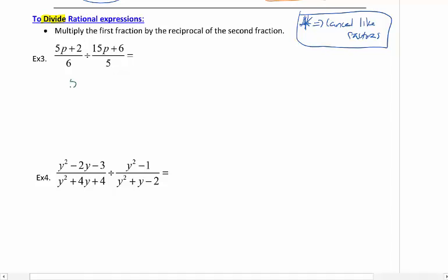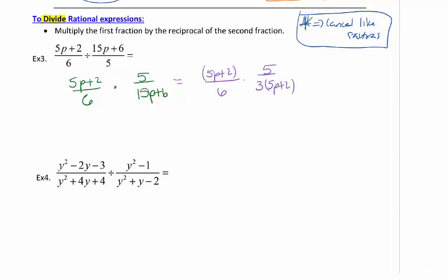The first thing I'm going to do on number 3 is flip the second fraction. Now that it's multiplication, I'm going to factor any of the terms that I can. There's nothing to do for the first fraction. The second rational expression, I can pull out a 3, and that would leave me with a 5p plus 2. Now that it's factored, I can cancel like factors because it's multiplication. So the 5p plus 2 will cancel.